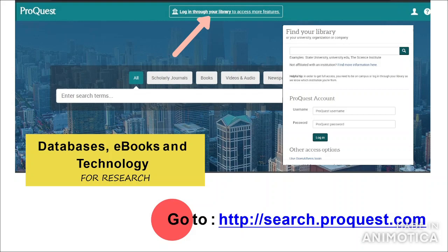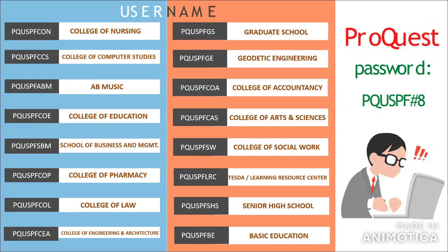ProQuest. Another database which provides scholarly journals, e-books, videos and audio, and dissertations and theses is ProQuest. To access it, key in the URL. Once entered, you are prompted to log in with your username and password. Here are the usernames for each department. More than thousands of collections are available — simply type a subject or keyword in the search box to retrieve full-text articles.